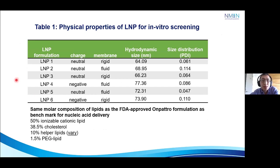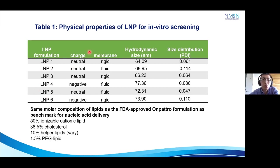In this table, we're showing the physical properties of six different LNP formulations with similar molar compositions of lipids as the recently approved Onpattro formulations as a benchmark. What we're changing is the helper lipids — we're choosing six different ones which reflect the range of lipids that can control charge distributions and membrane fluidity. Using dynamic light scattering, we showed that the hydrodynamic size is well under 100 nanometers and the size distribution is closer to zero, suggesting they are homogeneous in size.